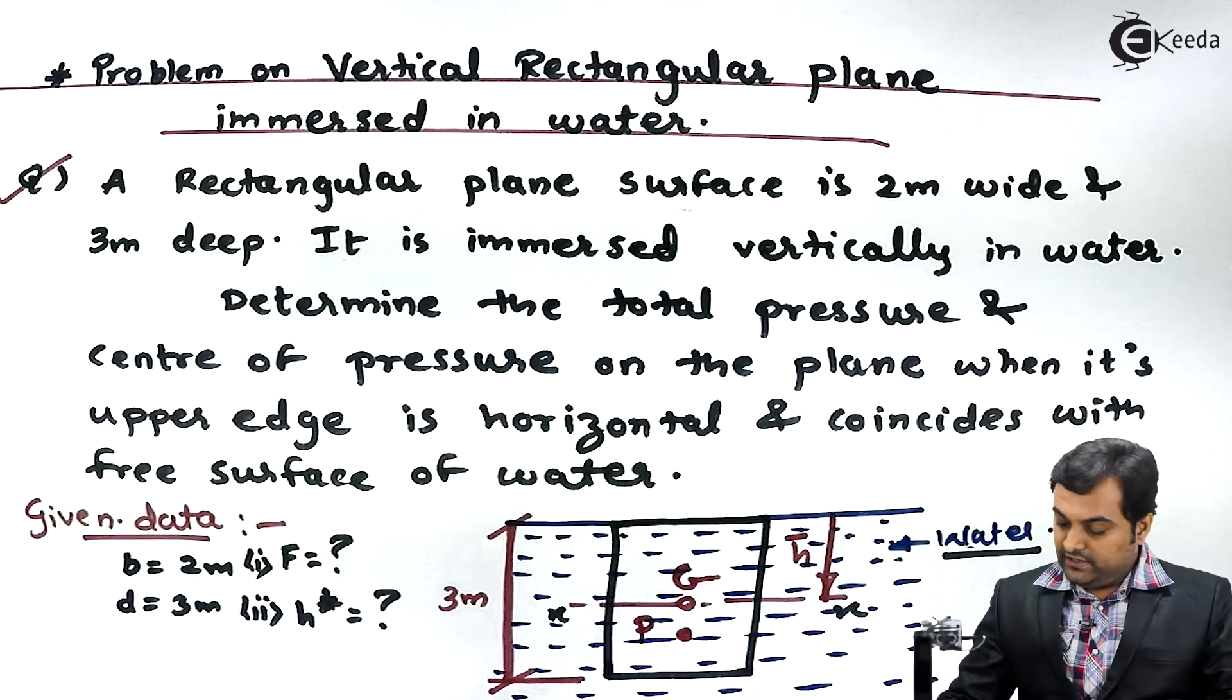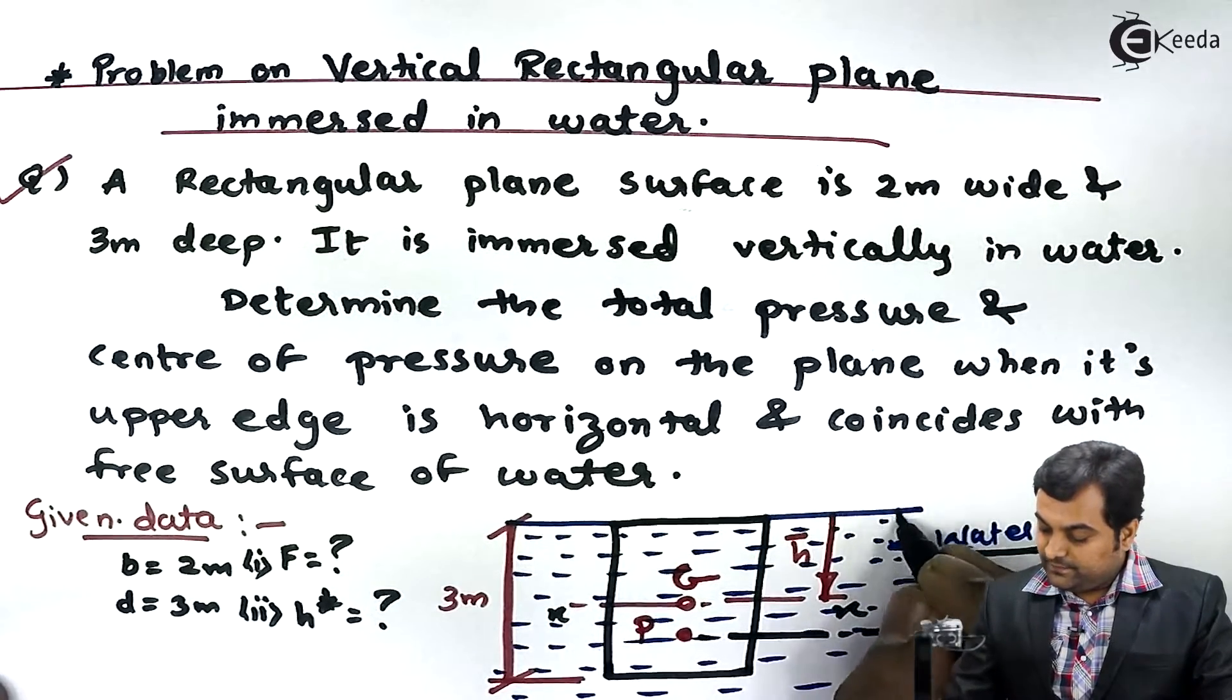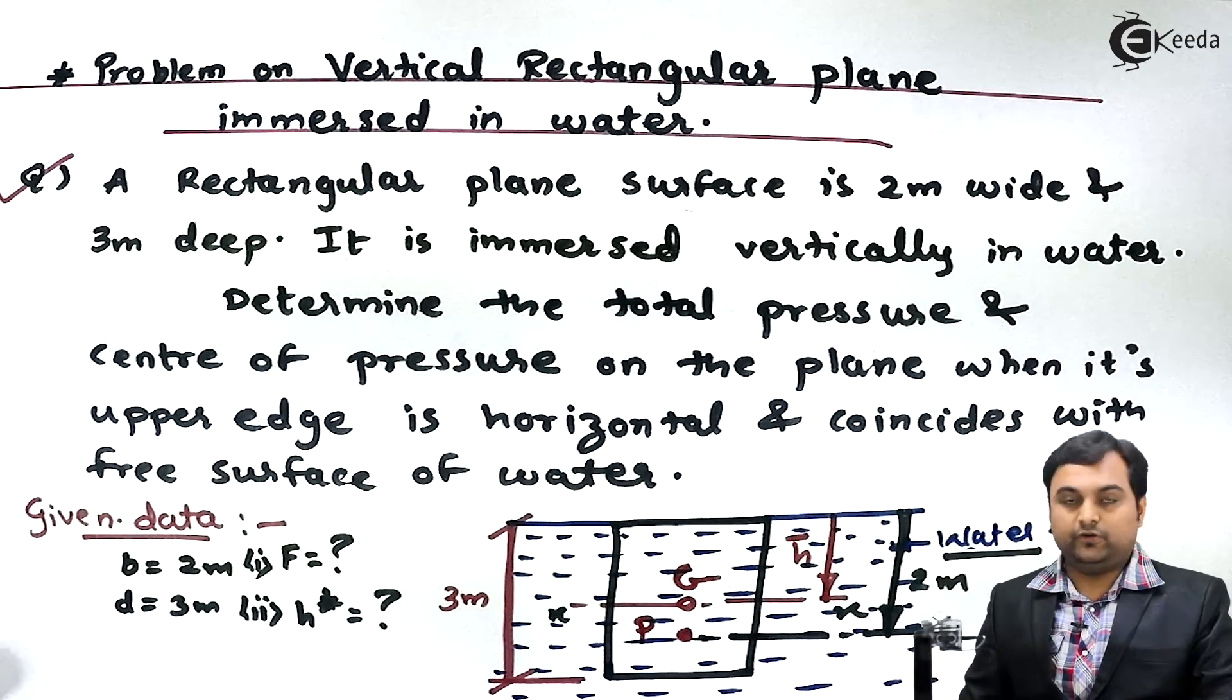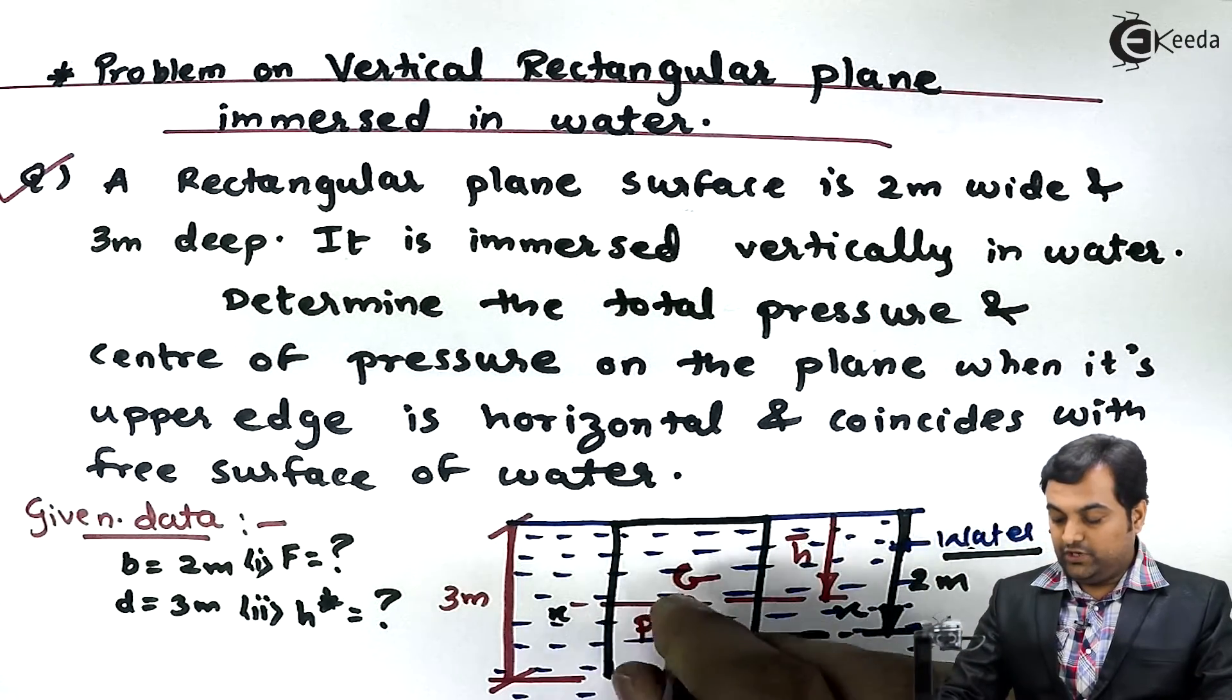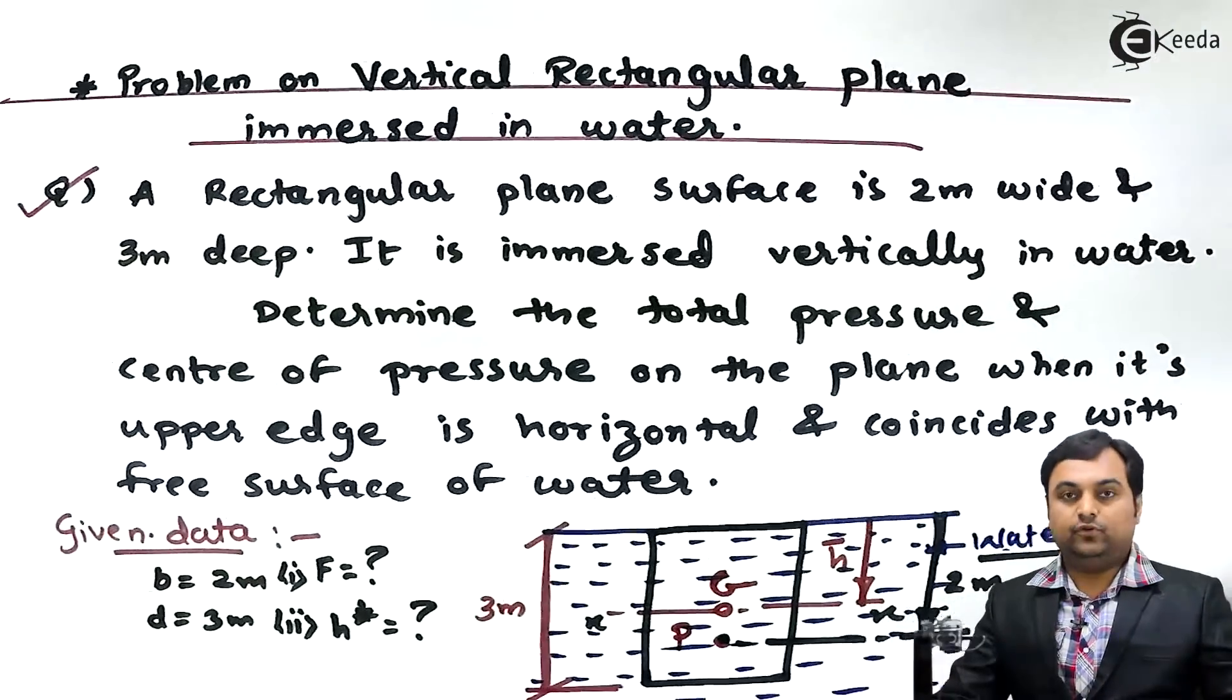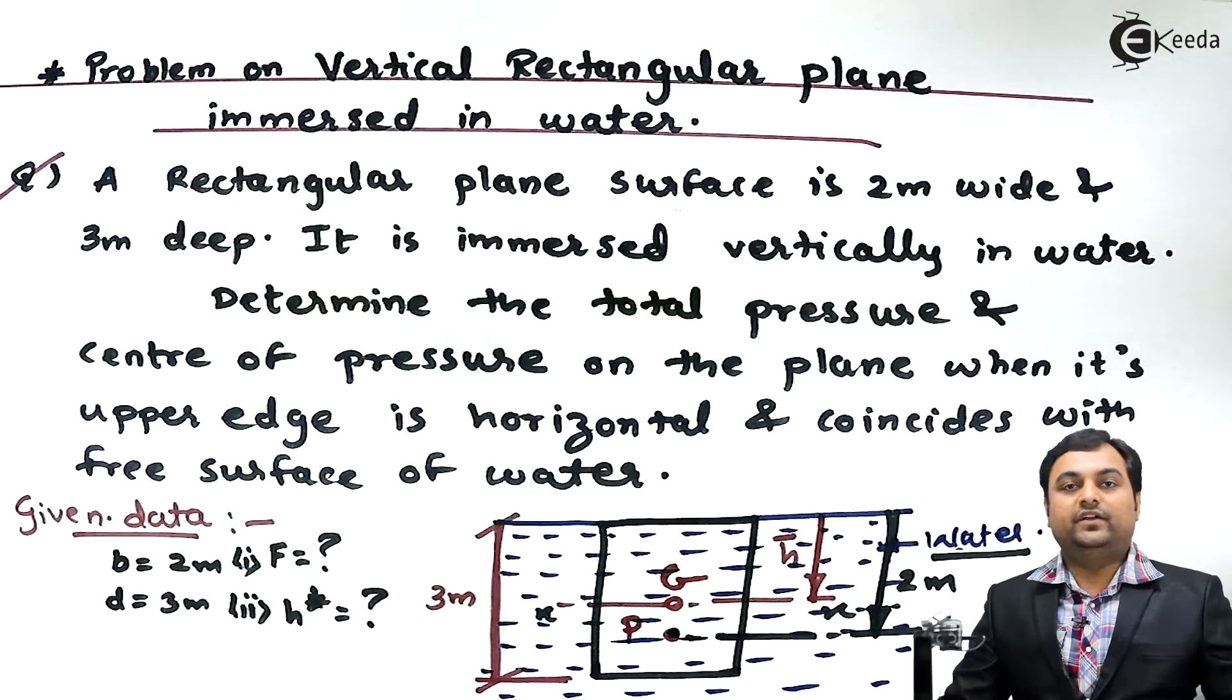And its distance from the free surface is 2 meter we have calculated. So at 2 meter distance from the free surface, at this location, the total force or hydrostatic force is acting whose value we have calculated. In this video we have seen how to calculate total pressure and center of pressure.